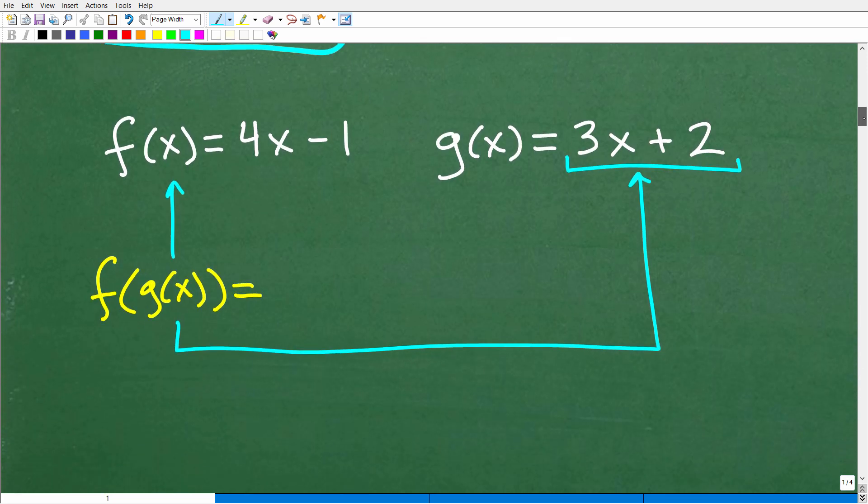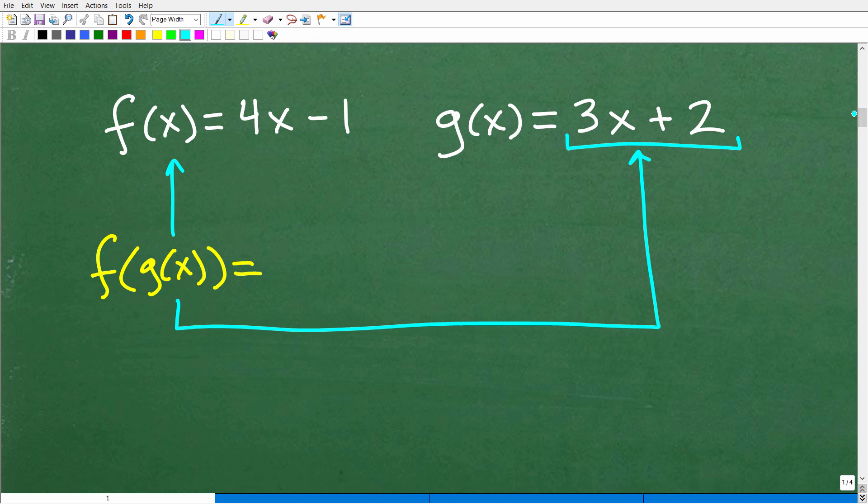So let's go ahead and take a look at what that looks like. So here is our function f(x) is equal to 4x minus 1. If I want to find the composite function f of g of x, what I'm stating is I want to plug in the g of x function into this function, the f function. Okay, so we've got to be clear about this.